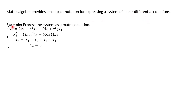Here's an example: express the system as a matrix equation. Notice what we have — four differential equations, each with a derivative, all up to the first derivative. Sometimes they're higher but we're just dealing with first derivatives here. We have x1 prime written in terms of x1, x2, and so on. x2 prime written in terms of x1, x2, and so on.